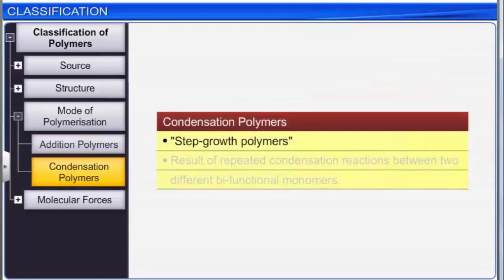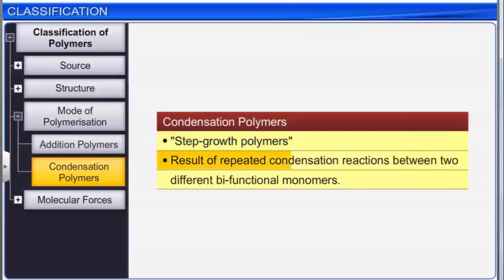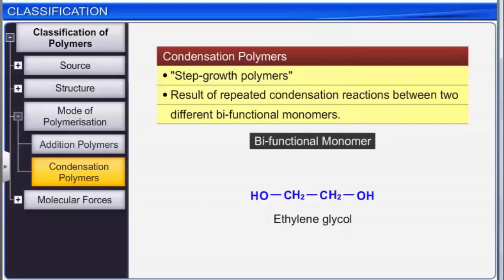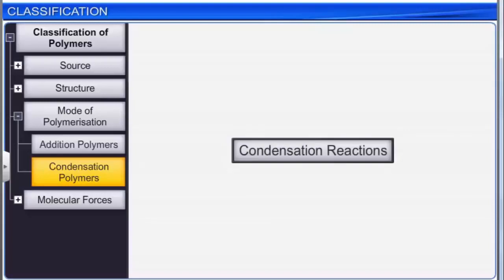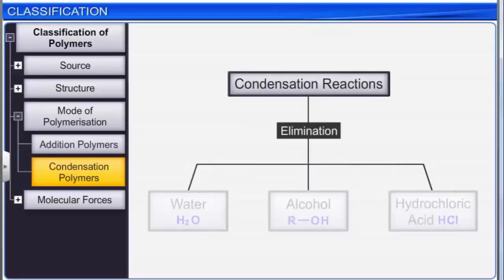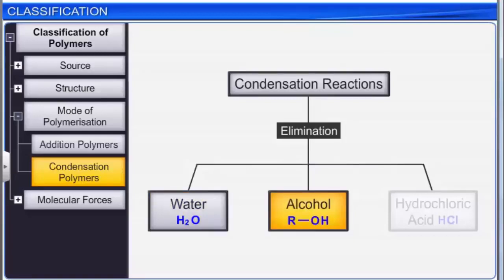Condensation polymers, or step growth polymers, are the result of repeated condensation reactions between two different bifunctional monomers. Ethylene glycol is an example of a bifunctional monomer — it is bifunctional because it has two hydroxyl groups. The condensation reactions involve the elimination of small molecules such as water, alcohol, or hydrogen chloride.